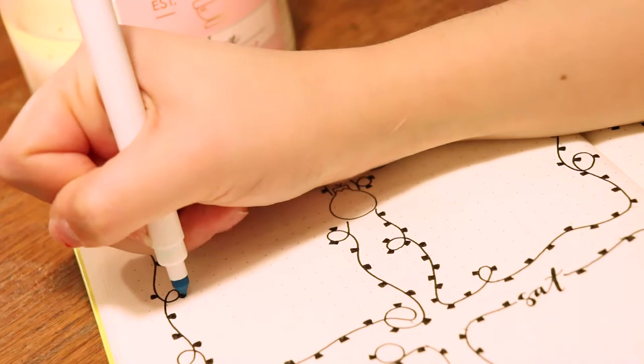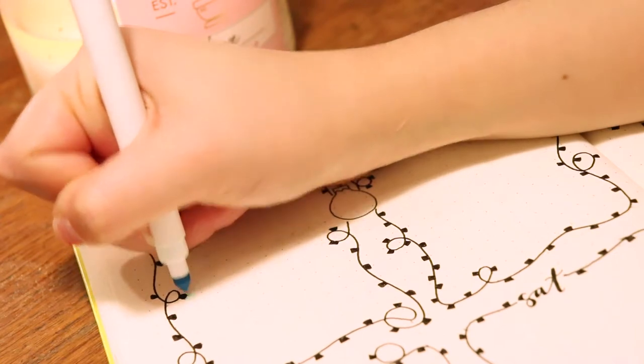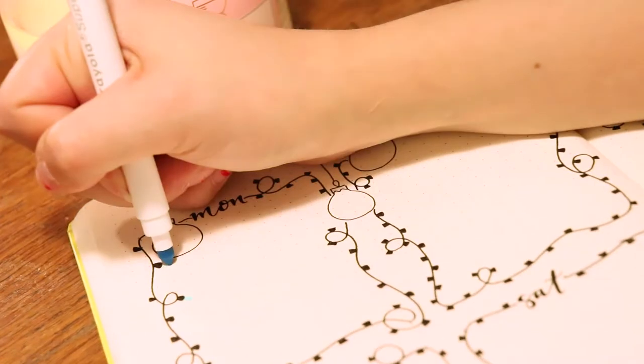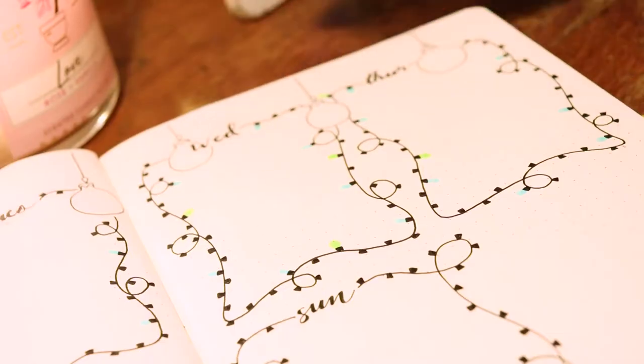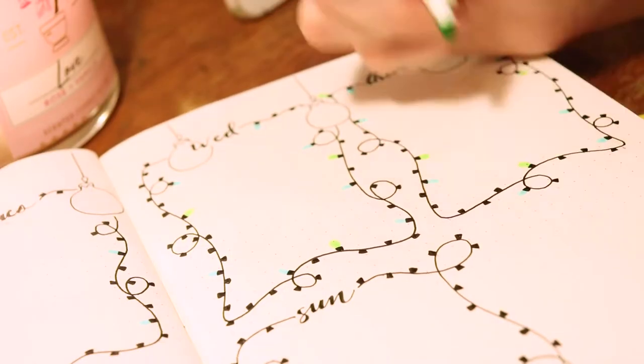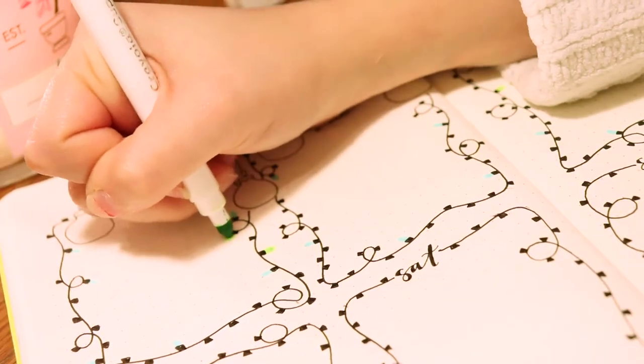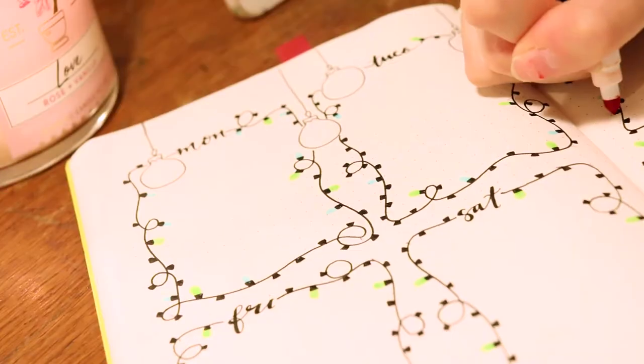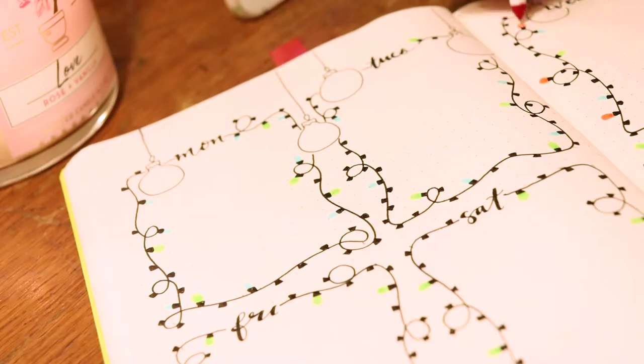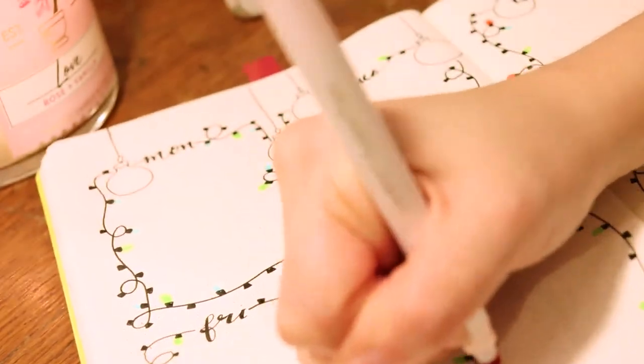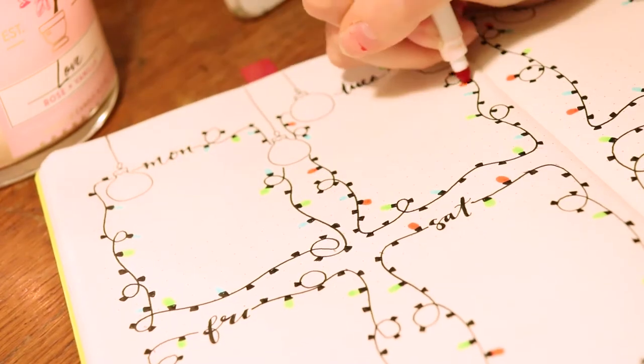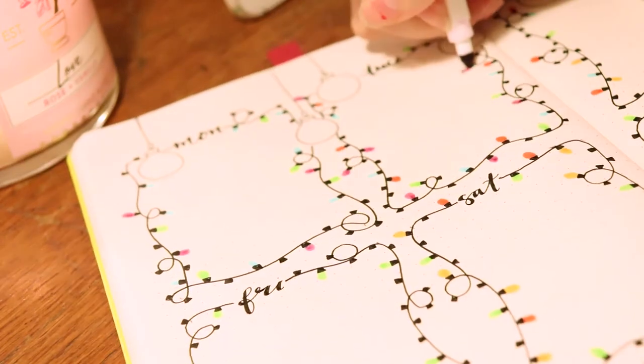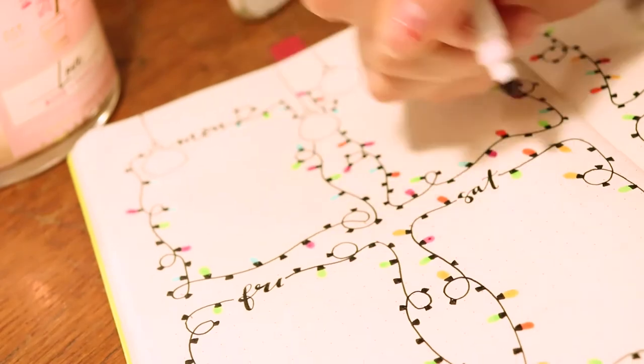Now I'm going in with the different Crayola Super Tips and I'm just kind of coloring in the different lights. This is the super fun part because you get to see it come to life. To draw the different lights, it's basically a tiny raindrop or light bulb shape. It's just like a little drop. It's really easy to draw and it makes a really big impact with all the different colors.